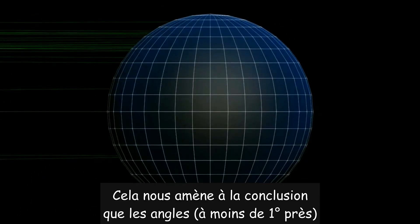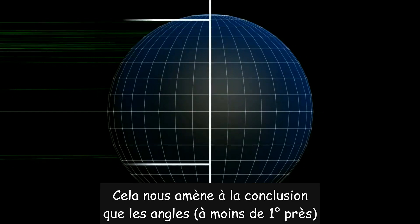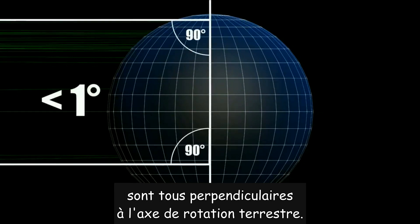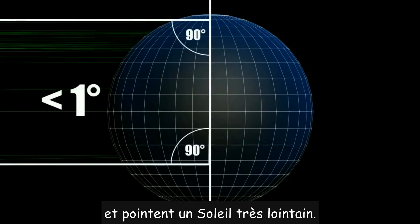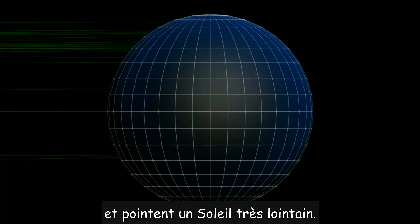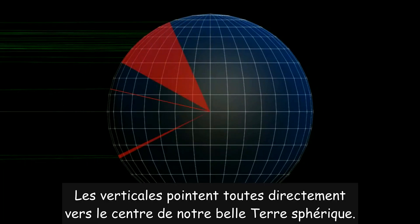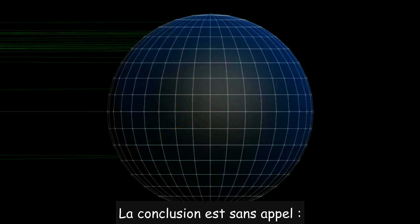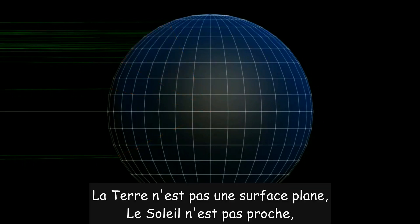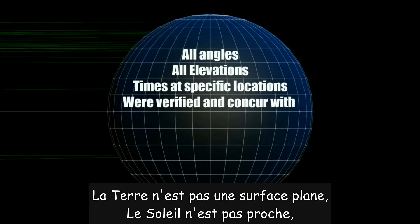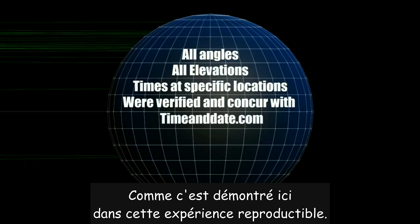So as you can see, this concludes that all angles are within less than one degree of perpendicular to the Earth's axis, pointing at a vastly distant Sun. And if we took all the stick angles, they all point directly to the center of our big round Earth. The conclusion is pretty apparent: the Earth is not a flat plane, the Sun is not close, as proved here with repeatable experimentation.